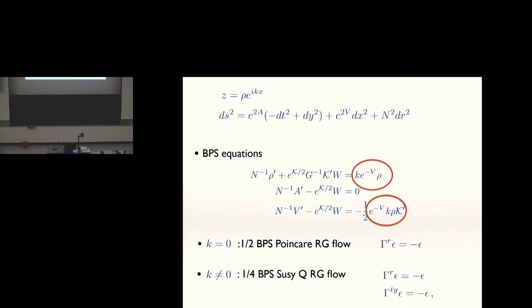When you switch on the spatially modulated source, you get these K-dependent sources on the right-hand side. When K is zero, you see that these two equations are actually identical, and V is A. So you get a Poincaré invariant RG flow, and the supersymmetry is just this radial projection on the supersymmetry parameter. And when K is not zero, epsilon is minus epsilon. And this only works if the superpotential W is actually a constant.